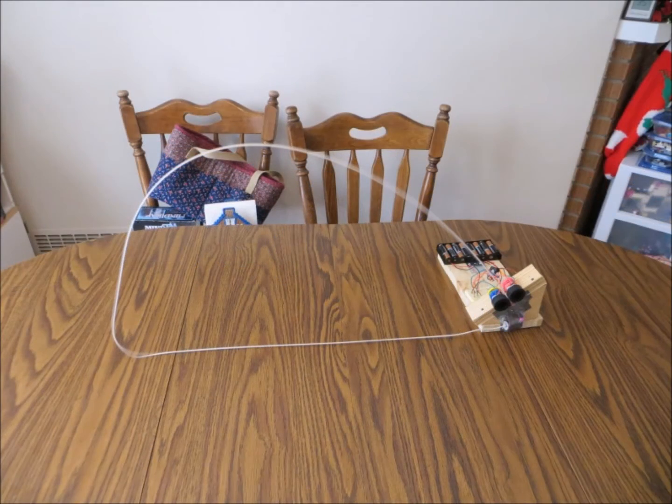You may notice that our loop is much smaller than Bruce's. We originally tried a longer loop, but the motors couldn't keep it in the air and so we shortened it. Bruce also picked his string shooter up and moved it around, showing that the string loop didn't need a table to support it. We can't do that with ours. Again, the string will droop.